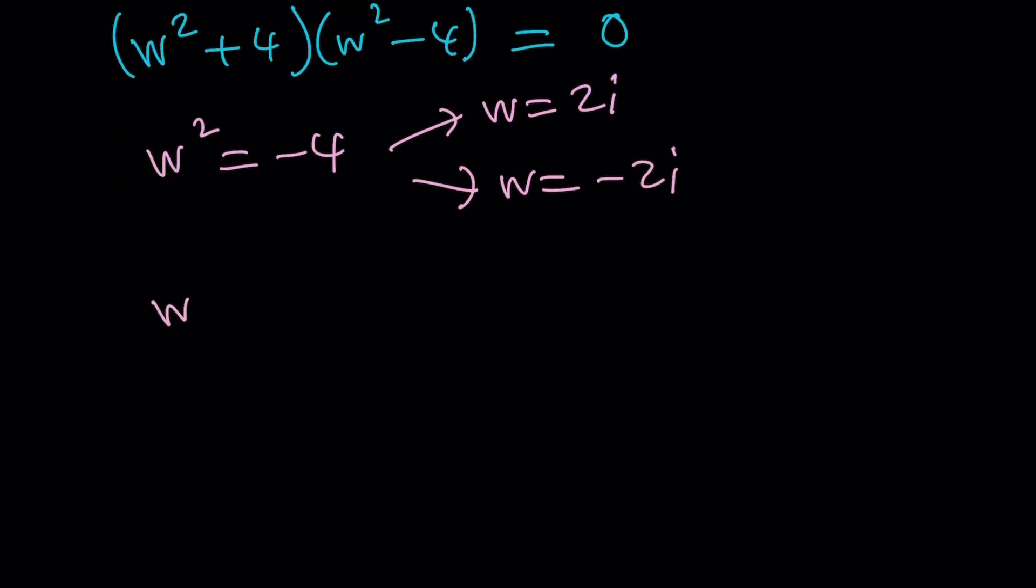So those are the two solutions. And then there's two more. If you set W squared equal to 4, obviously W is 2, but it can also be negative 2. I'm not saying the square root of 4 is 2 and negative 2 or plus minus 2, but I'm just saying that there are two numbers whose square equals 4. Those numbers are 2 and negative 2. You got to think complex, not real. So we got four solutions.